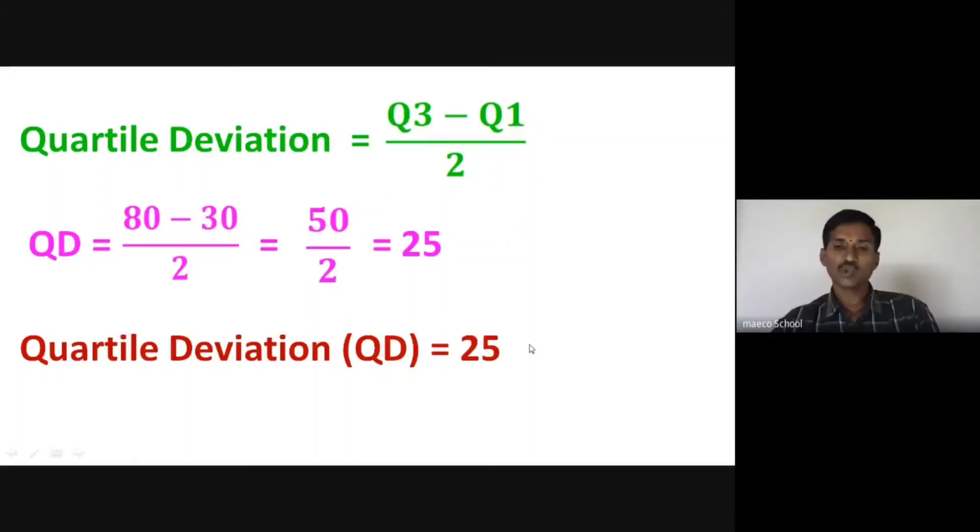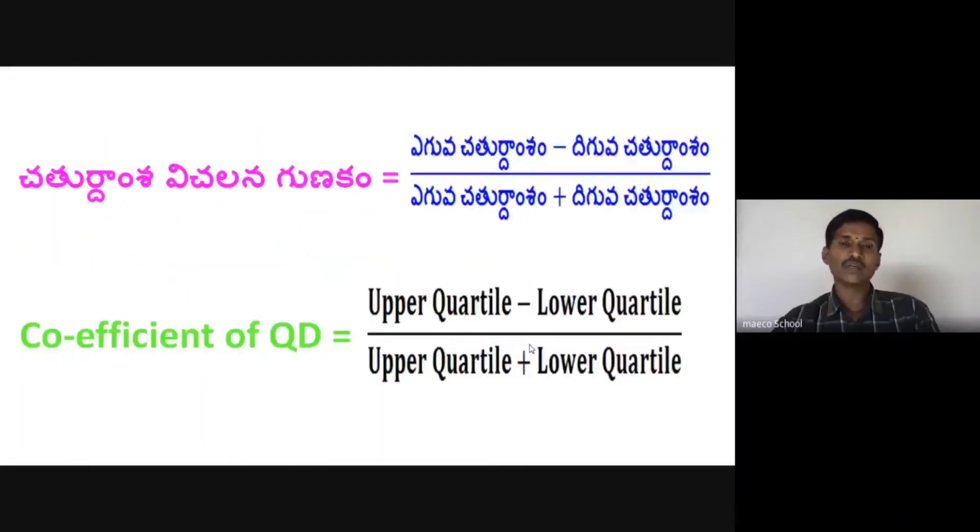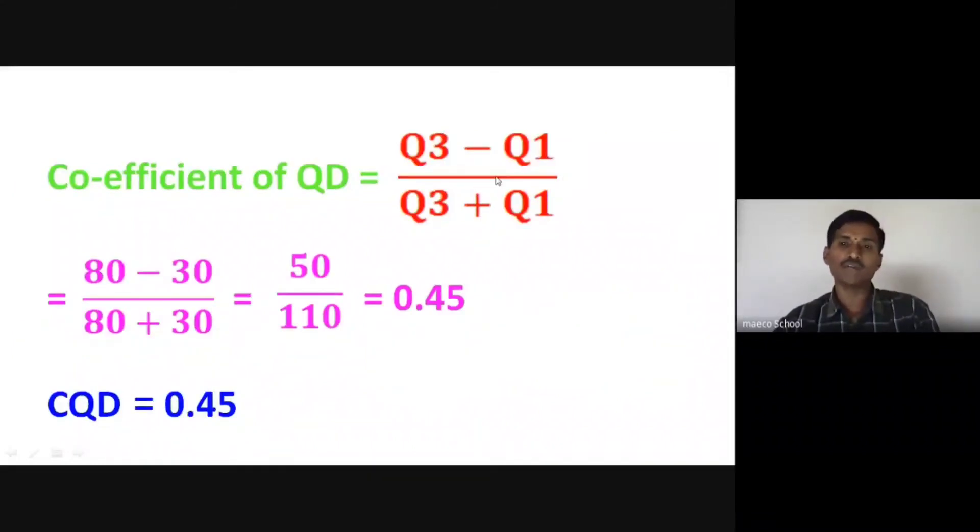Next, the coefficient of quartile deviation. The formula is upper quartile minus lower quartile divided by upper quartile plus lower quartile. Symbolically, this is Q3 minus Q1 divided by Q3 plus Q1.